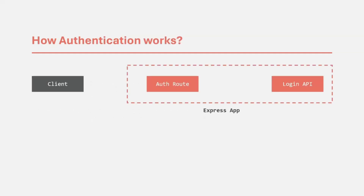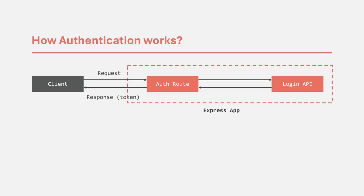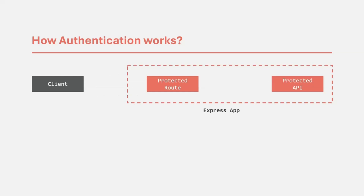In our application, we already have a login API in place. From the client, whenever a user makes a request for login, the request will go to the login API and the login API is going to return us a response, and in that response we are going to have a token. Once the user is logged in and tries to access a protected route, we are also going to send that token which we received in the response when we logged in.